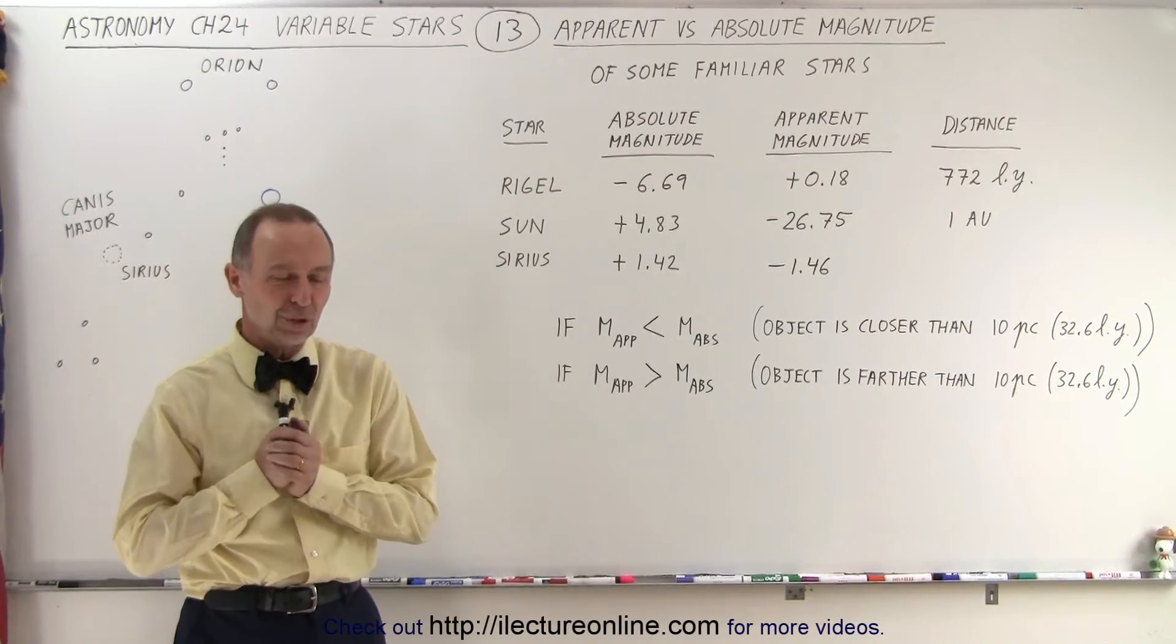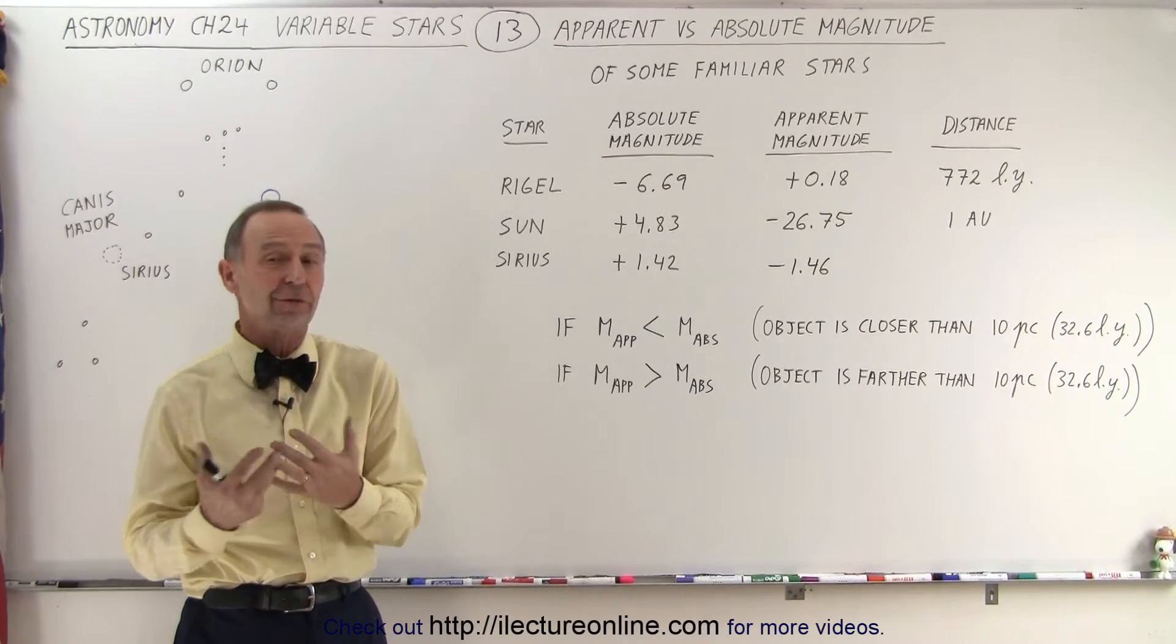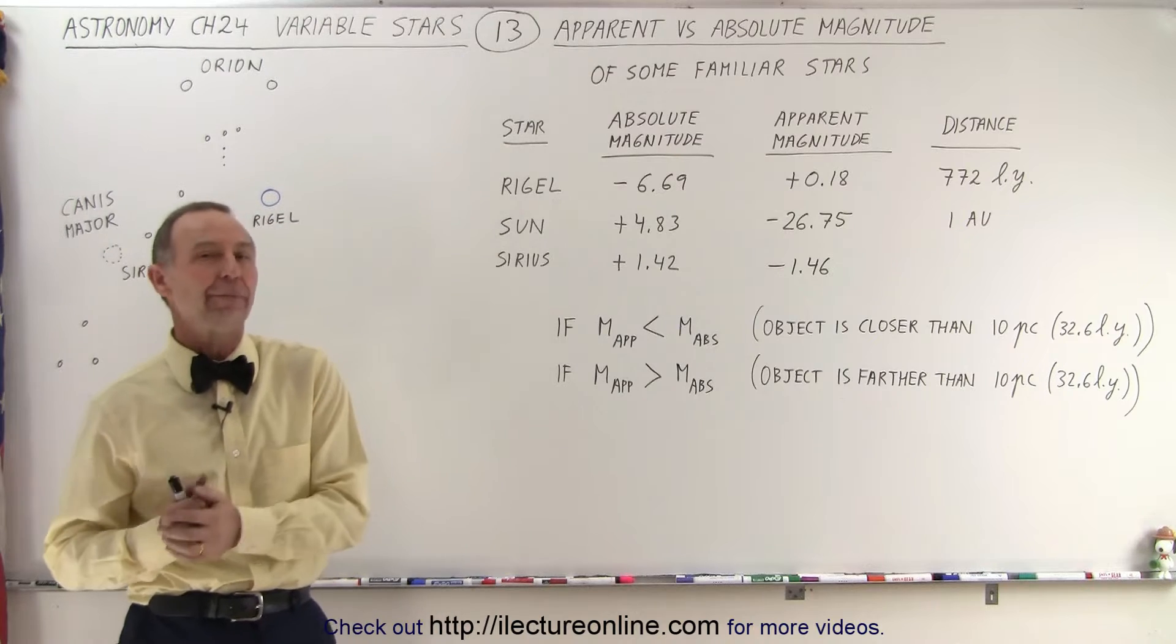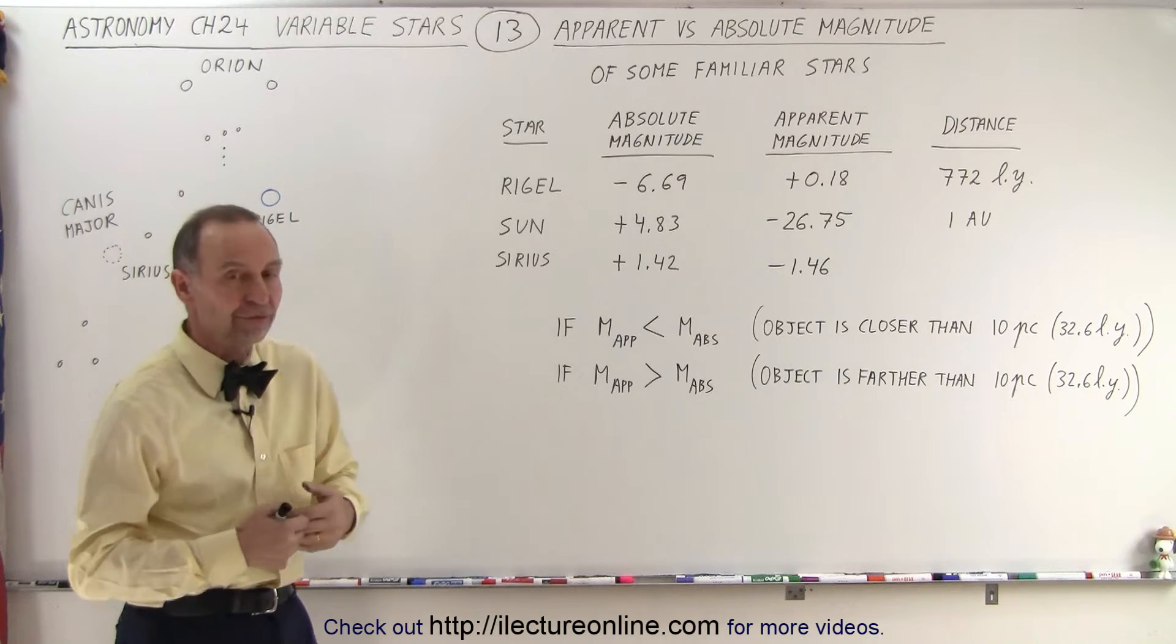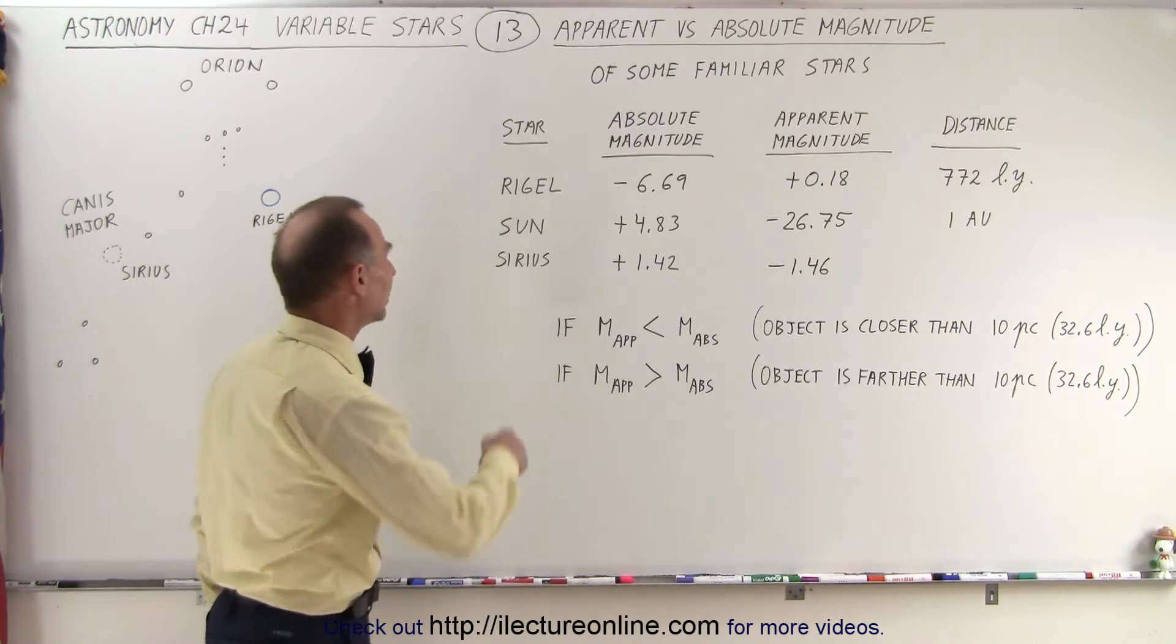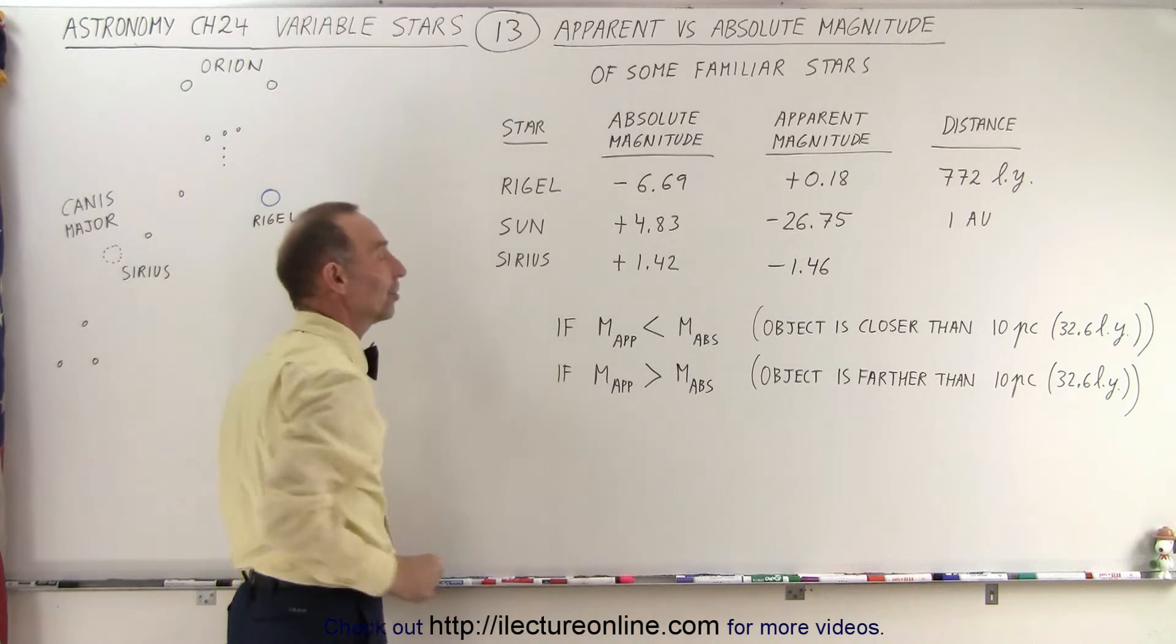Welcome to ElectrOnline. To give us a better intuitive feel for absolute and apparent magnitude, let's take a look at some familiar objects. We're going to look at Rigel, our Sun, and Sirius.